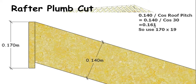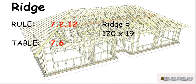So we have to be at least 161 mm or larger for the depth of our ridge. A standard size of around 170 mm works, so we're going to use 170 by 19 for our ridge material. There we go — we've worked out the size of our ridge material for this particular roof: 170 by 19.